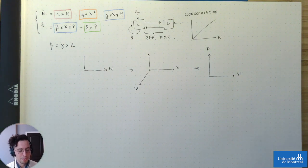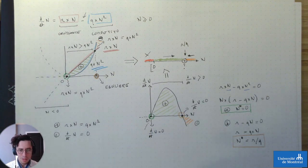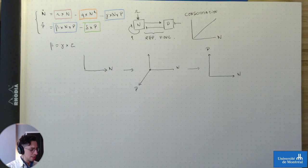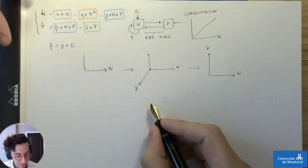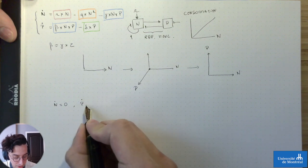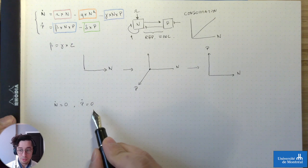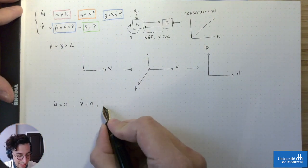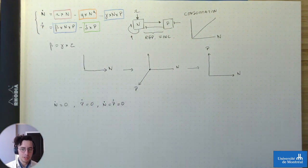Revenons sur le concept vu tout à l'heure. Un état d'équilibre, ça correspond à la dérivée de quelque chose égale à zéro. Là, on a deux dérivées parce qu'on a deux espèces dans notre modèle. Nos états d'équilibre vont être définis par : la dérivée de n = 0 (pas de changement dans la proie) ET la dérivée de P = 0 (pas de changement dans le prédateur). Les états d'équilibre où le système ne change pas du tout, c'est quand les deux dérivées sont simultanément égales à zéro.